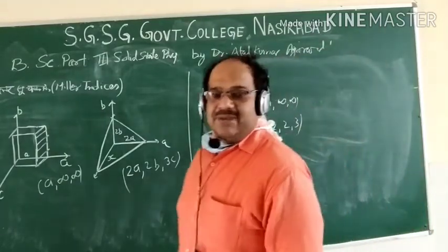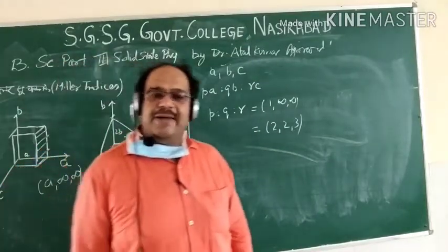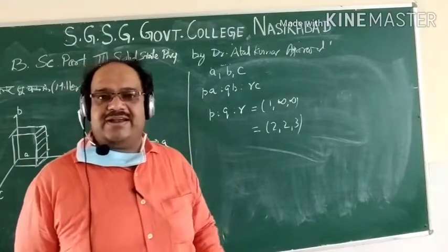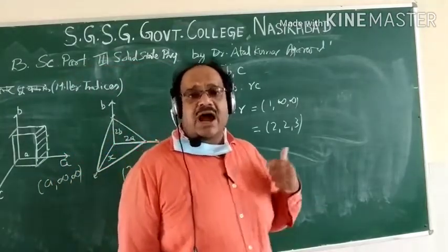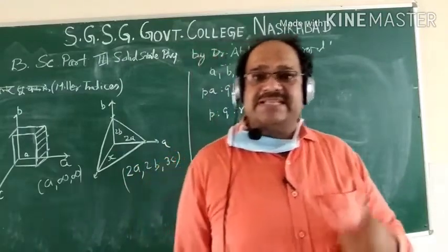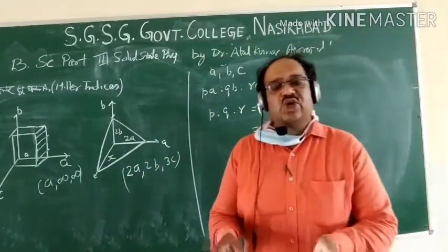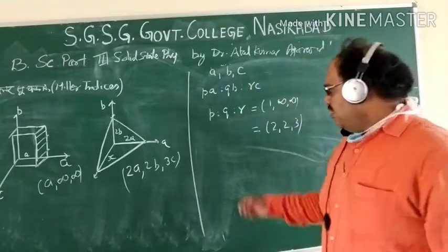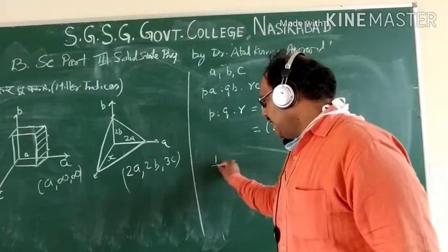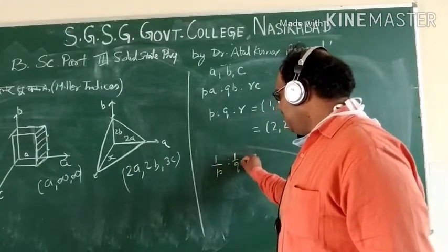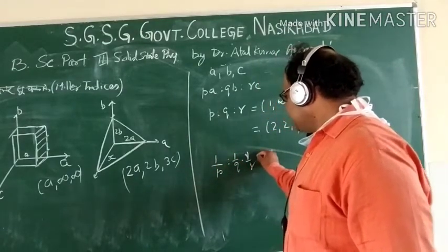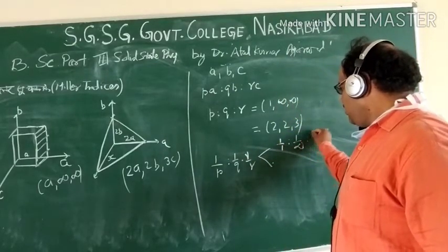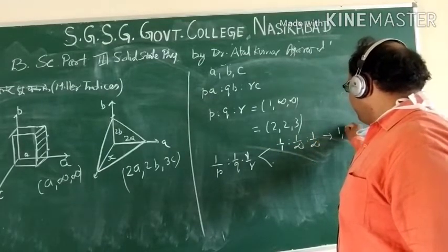So when we write Miller indices, we have to define ABC first. In ABC, we have to define a primitive unit — there are primitive vectors in ABC. We have to take the intercept of ABC in a multiple form: P times A, Q times B, R times C, and take the ratio of PQR. Now, we have to take the reciprocal. As we write the reciprocal, in the first condition it has become 1, 0, 0.